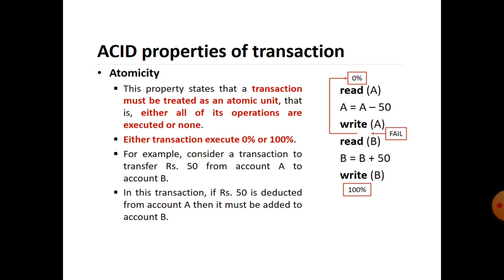Now, ACID properties in detail. First, Atomicity: this property states that a transaction must be treated as an atomic unit — either all of its operations are executed or none. A transaction executes either zero percent or one hundred percent. For example, consider a transaction to transfer 50 rupees from account A to account B. If 50 rupees is deducted from A, then it must be added to account B; otherwise, the entire process will be reverted back.